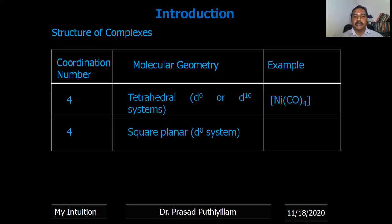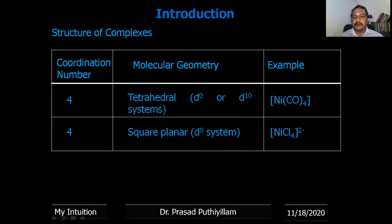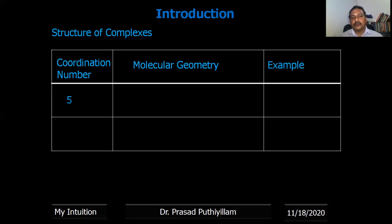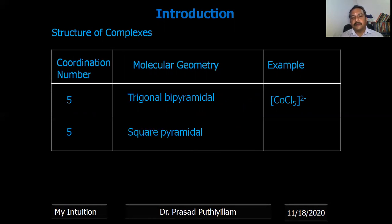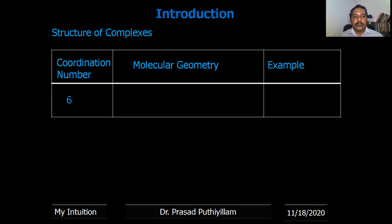The second geometry for coordination number four is square planar — this occurs for d⁸ systems (also d⁰ and d¹⁰ can be exceptions). For d⁸ electronic configuration of the central metal ion, complexes with coordination number four adopt square planar structure — example [NiCl₄]²⁻. If coordination number is five, two geometries are possible: trigonal bipyramidal — example [CoCl₅]²⁻ — and square pyramidal — example [V(CN)₄]²⁻. If coordination number is six, the geometry is octahedral — example [CoCl₆]³⁻.